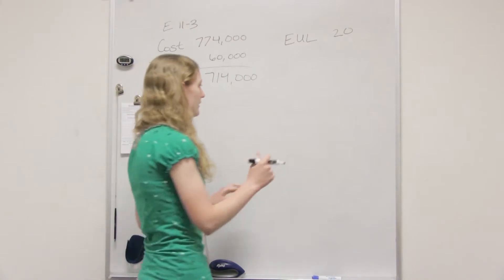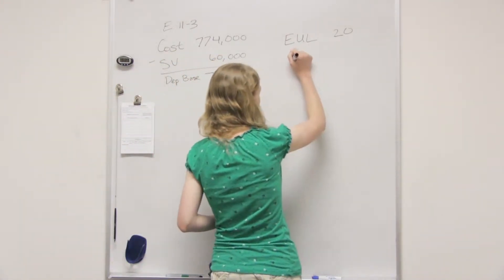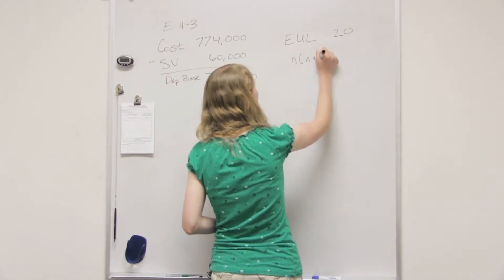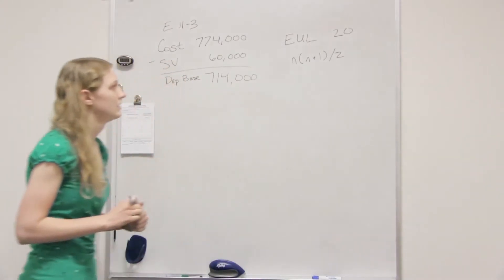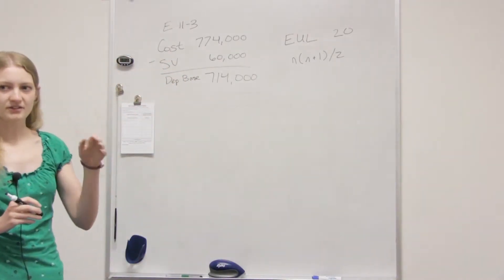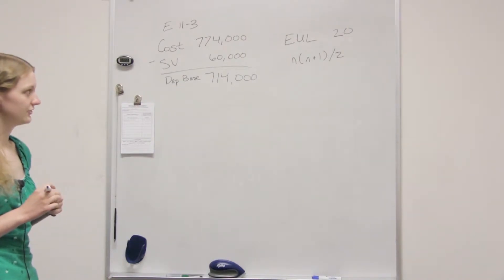So, let's see. We have to find our denominator. And that's the N times N plus 1. So that was... And that changes every year? Yeah. It's going to start at 20 and then decrease each year until we reach 0, I guess.